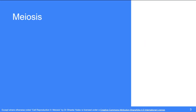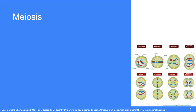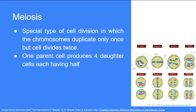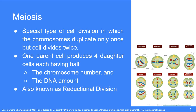Before discussing the steps in meiosis, let us discuss some basic points: what is meiosis, who discovered it, and in what kind of cells does it occur. Meiosis is a special type of cell division in which the chromosomes duplicate only once but the cell divides twice. Therefore, one parent cell produces 4 cells each having half the number of chromosomes and half the amount of DNA, and due to this reduction, it is also known as reductional division.